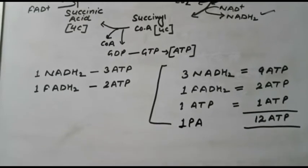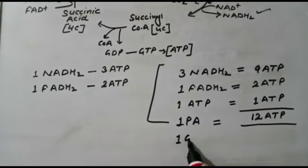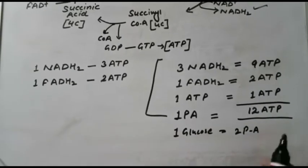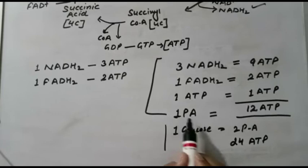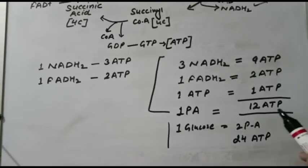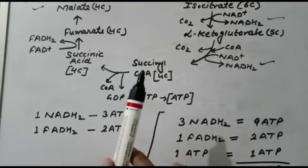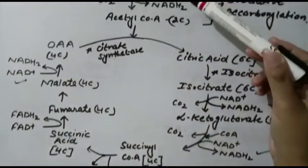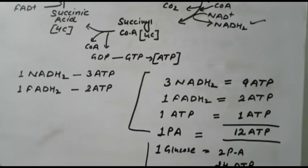From one pyruvic acid, we get 12 ATP. But from one glucose molecule, we get two pyruvic acids. So from two pyruvic acids we get a total of 24 ATP. Remember: from one pyruvic acid, 12 ATP; from one glucose, 2 pyruvic acids are formed, so the number of ATPs doubles to 24 ATP. The cycle we have explained covers one molecule of pyruvic acid, but one glucose always forms two pyruvic acids, giving 24 ATPs total.